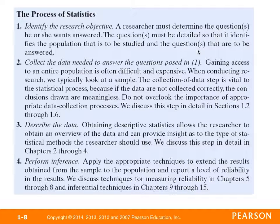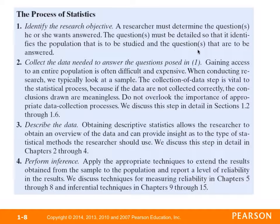The process of statistics consists of four main steps. Step one: identify the research objective. The researcher must determine the questions he or she wants to answer before doing anything else. It must be detailed enough to identify the population and the questions being answered. Step two: collect the data needed to answer the question. Gaining access to an entire population is often very difficult and expensive, so we typically look at samples. The data collection step is vital because if data isn't collected correctly, the conclusions drawn are meaningless.